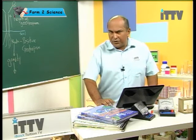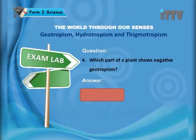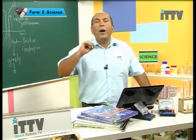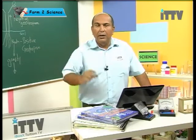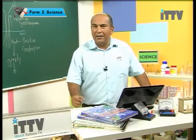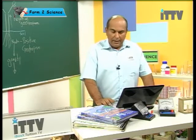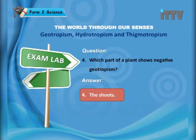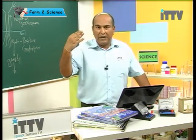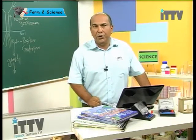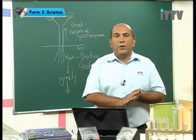One last question: which part of a plant shows negative geotropism? Remember, negative means it must be growing away from gravity. The answer is the shoots. The shoots grow away from gravity, therefore they show negative geotropism.